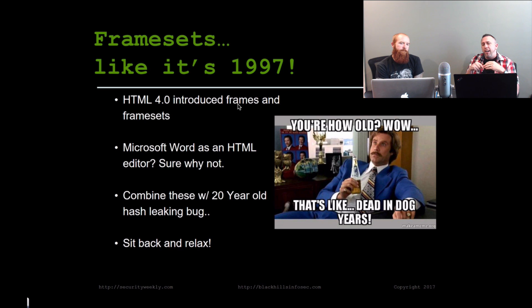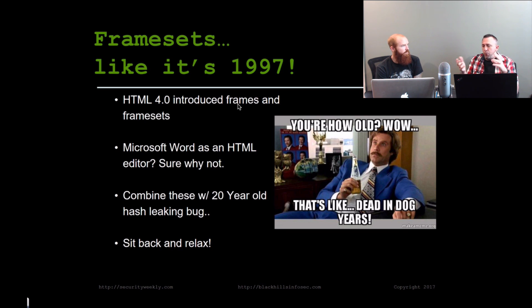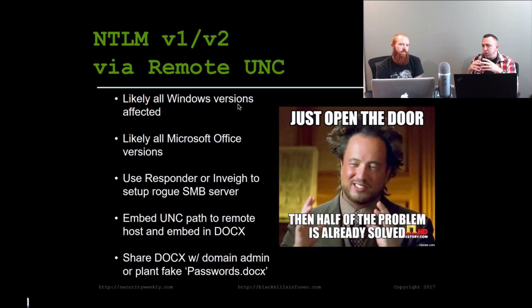So I was thinking, what if we combined HTML framesets with a UNC path but set Responder up externally so it's listening on the web? To grab the hashes that come through, or to do some NTLM relaying. So we took the framesets, combined them with that 20-year-old bug, threw it into a Word document and sent it on. The cool thing is it affects pretty much all Windows versions because this NTLM hash leaking has been around for a really long time.